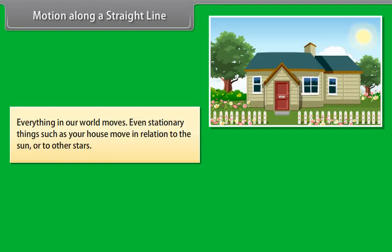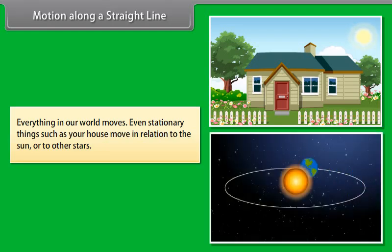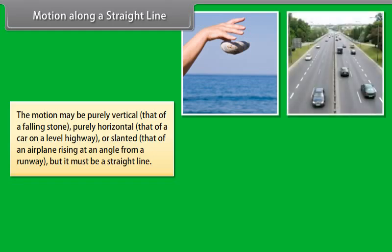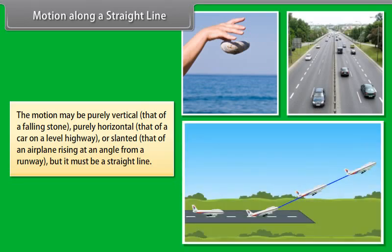Motion along a straight line: Everything in our world moves. Even stationary things such as your house move in relation to the sun or other stars. The motion may be purely vertical — that of a falling stone — purely horizontal — that of a car on a level highway — or slanted — that of an airplane rising at an angle from a runway — but it must be a straight line.